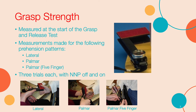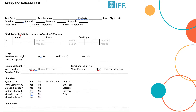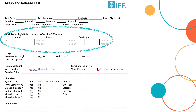Grasp strength is measured at the start of each GRT using a modified B and L pinch meter. The L-shaped modification better accommodates the tetraplegic hand. This modification affects the force measurements; therefore, to get a true reading of force, the number on the dial must be divided by a conversion factor. Each pinch meter has its own conversion factor, which is approximately three. Grasp strength values are recorded on page one of the grasp release test form, with space for values in all three grasp modes, with and without the NNP.